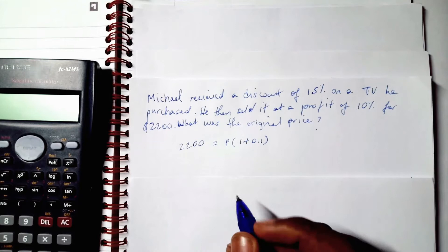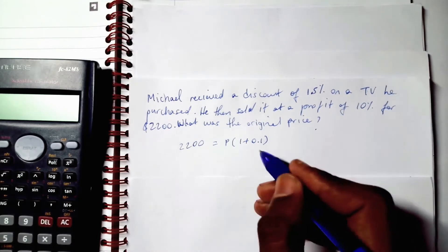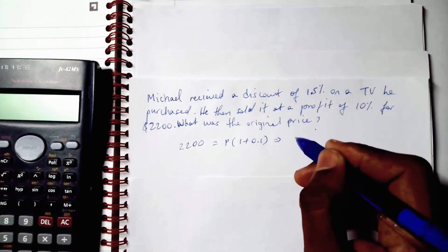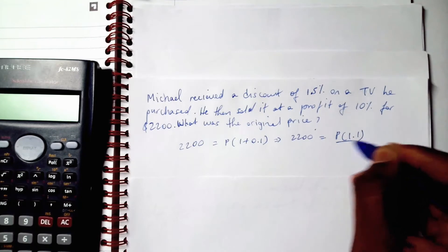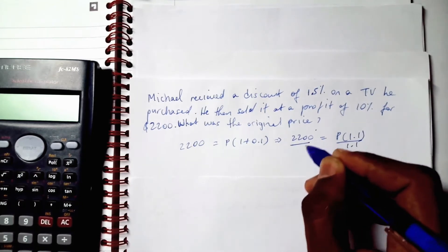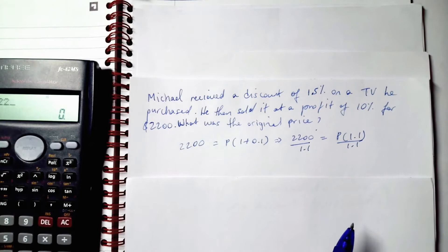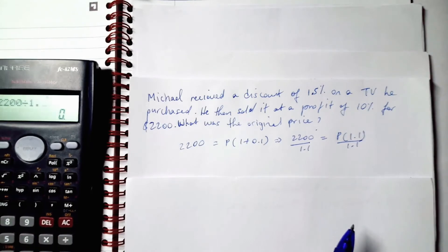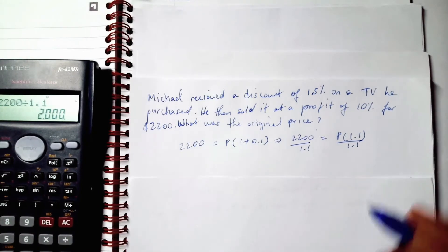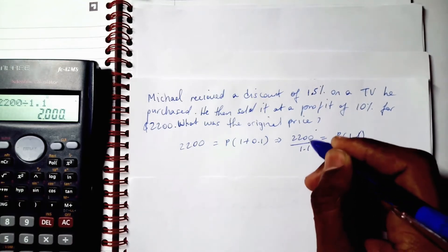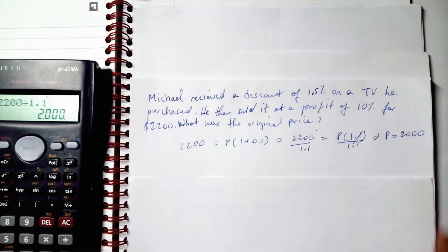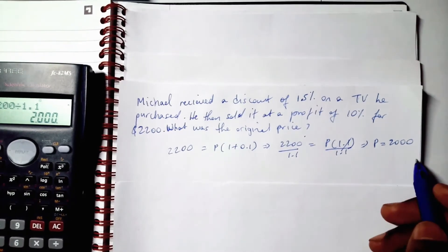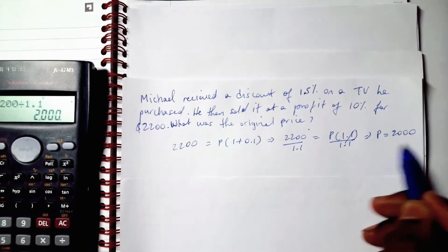Let's find that number. We rewrite this as 2200 = P × 1.1. Divide both sides by 1.1. What do we get? 2200 divided by 1.1 equals 2000. So P is equal to $2000.